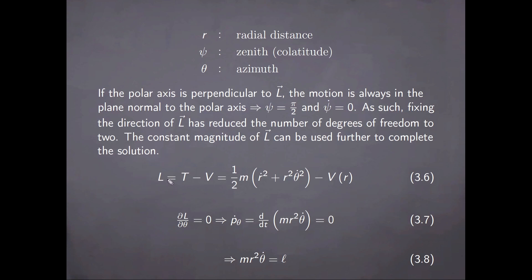The constant magnitude of the orbital angular momentum can be used further to complete the solution, and this is done as follows. The Lagrangian is going to be the difference between kinetic and potential energy in spherical polar coordinates, with the expression written here. Since it does not depend explicitly on the azimuth angle, the rate of change of the canonical momentum conjugate to it is zero. Then the quantity mr²θ̇, obtained from the corresponding Lagrange equation, is constant in time and equal to l, the magnitude of the orbital angular momentum.